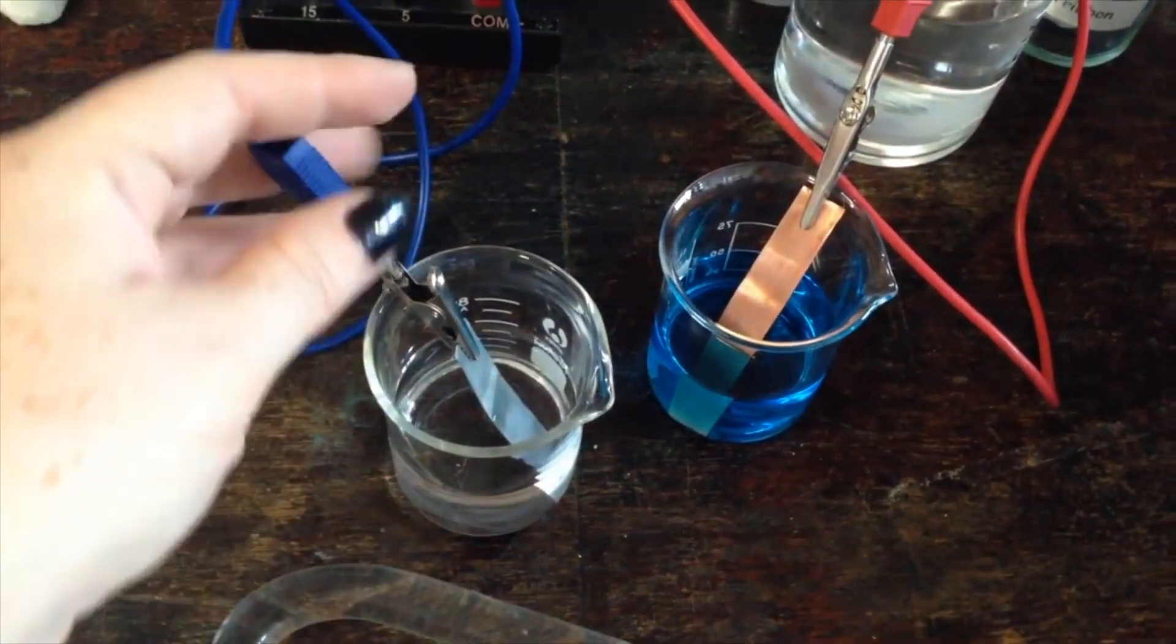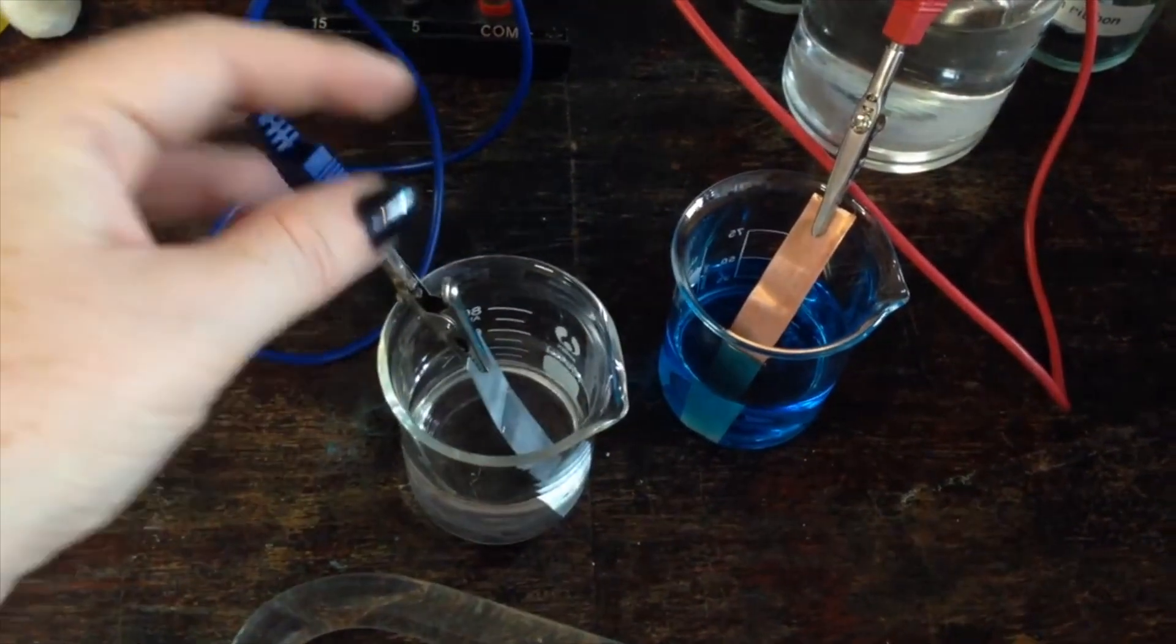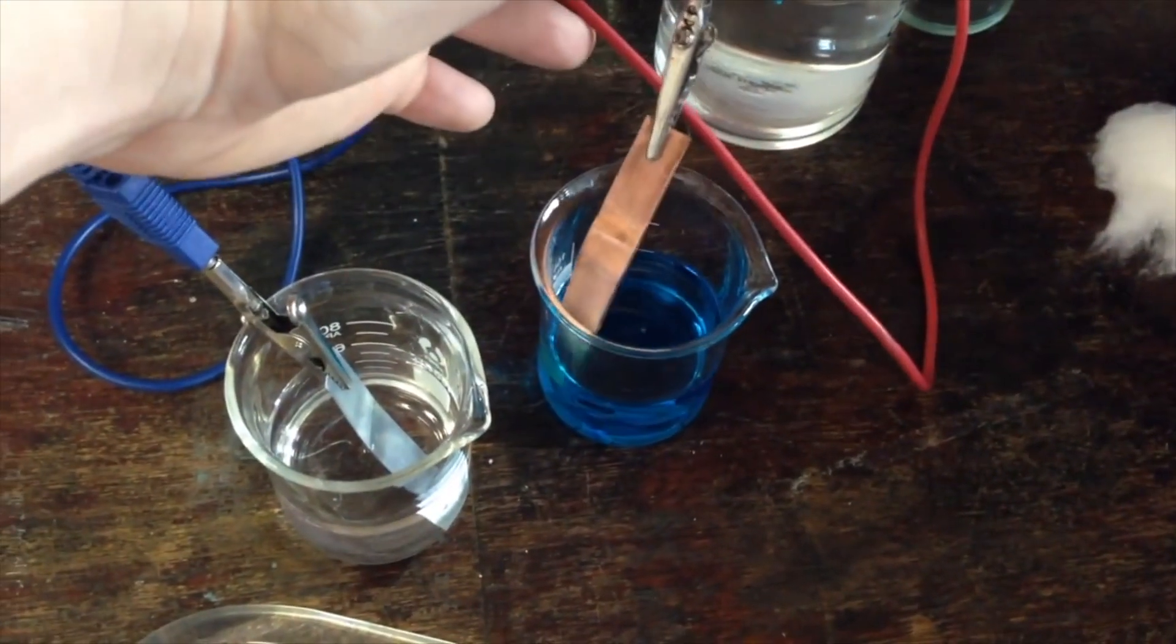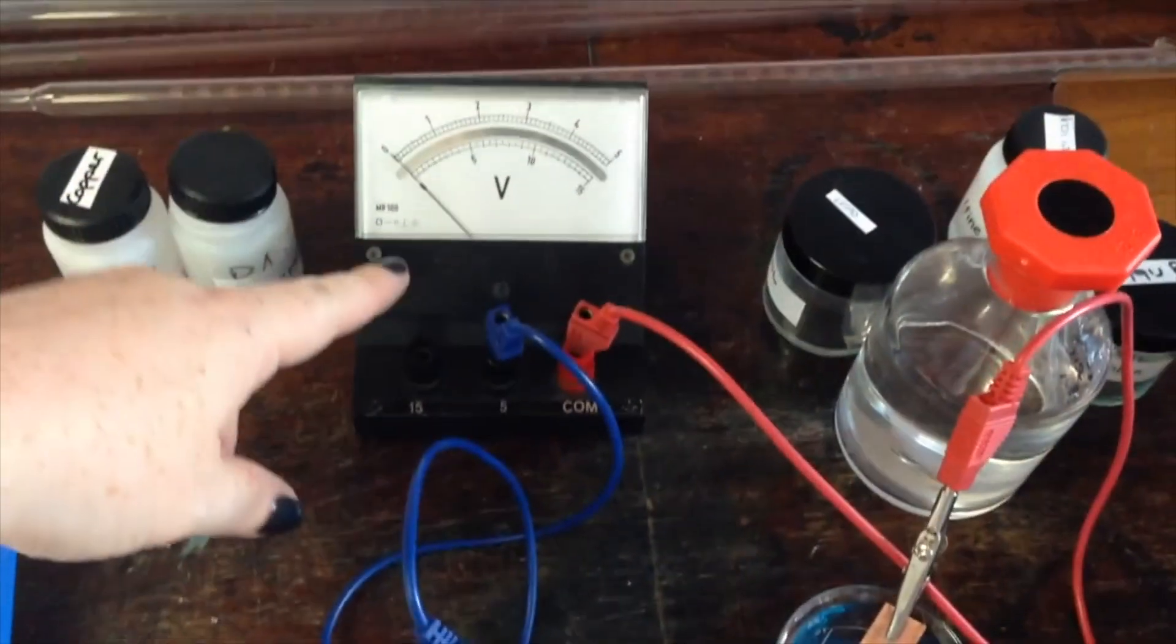So here we're setting up an electrochemical cell. Here I have a sample of zinc in zinc sulfate solution. Here is a sample of copper in copper sulfate solution. They are connected up to a volt meter at the back.